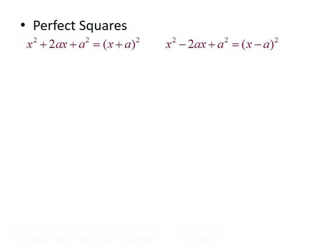The next set of special formulas are called perfect squares. If you have a polynomial of the form x squared plus 2ax plus a squared, that can be factored to be x plus a quantity squared. And if you have x squared minus 2ax plus a squared, that is factored to be x minus a quantity squared. Let's do a couple of examples using perfect squares.